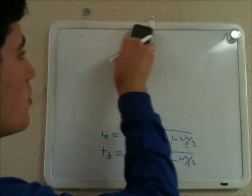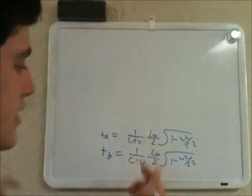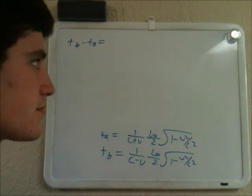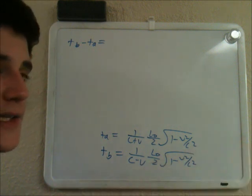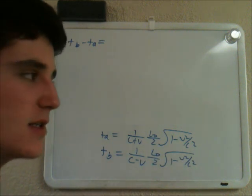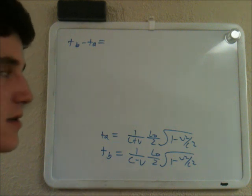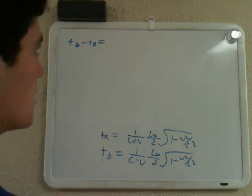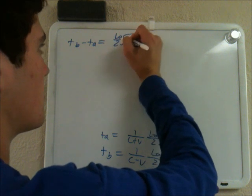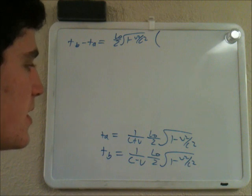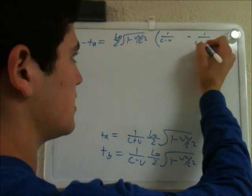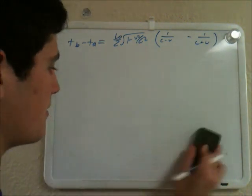The desynchronization between the clocks is the difference between the times: tb minus ta. Because if it took 5 seconds to hit one clock and 10 seconds to hit the other clock, the second clock will be running with a difference of 5 seconds — 10 minus 5 — and there would always be a 5-second desynchronization between the two clocks. We factor out L0 over 2 times the square root of 1 minus v squared over c squared, and get: 1 over (c minus v) minus 1 over (c plus v).